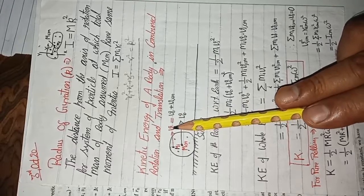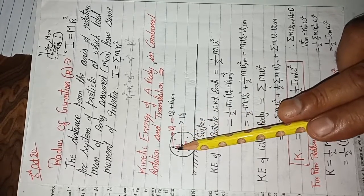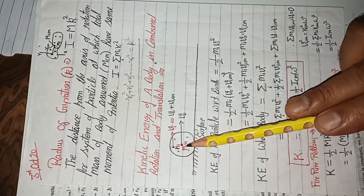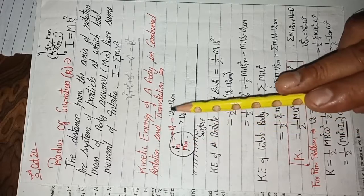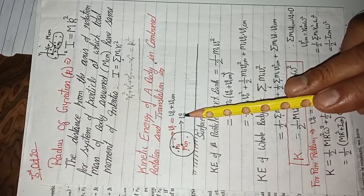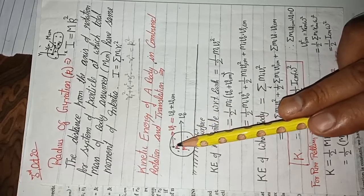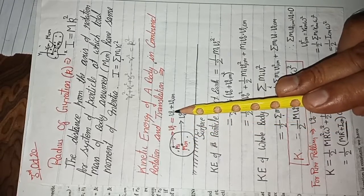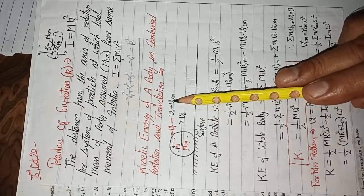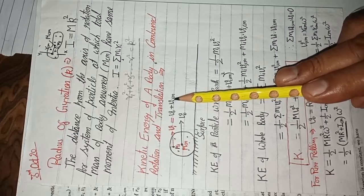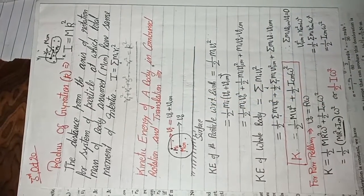Here, the velocity of the ith particle — any particle — can be taken. The velocity of the ith particle will be compared to the velocity of the center of mass, v₀. Since I have taken a point above the center of mass, its velocity will be more than the velocity of the center of mass. That is why the velocity of the ith particle equals the velocity of the center of mass plus the velocity of the ith particle relative to the center of mass.